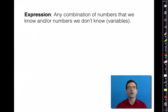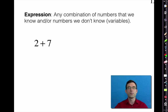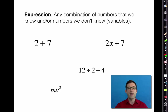Today we're going to be talking about variables and also about expressions. The definition of an expression is very important — it's any combination of numbers that we know and/or numbers we don't know, in other words, variables. So we can have expressions like 2 plus 7, 12 divided by 2 plus 4, something that involves a variable like 2 times x plus 7, or something that involves more than one variable like m times v squared. These are all expressions. Please note they're not equations because they don't establish any kind of equality between two things — they're simply a combination using multiplication, division, addition, and subtraction of numbers that we know and numbers that we don't know.